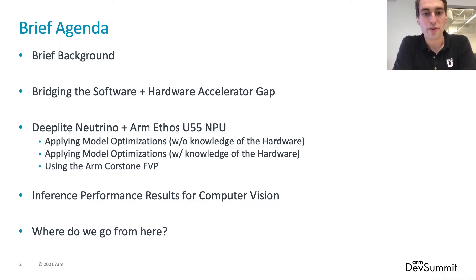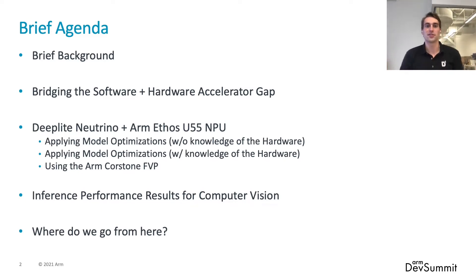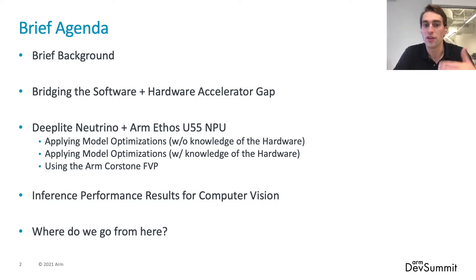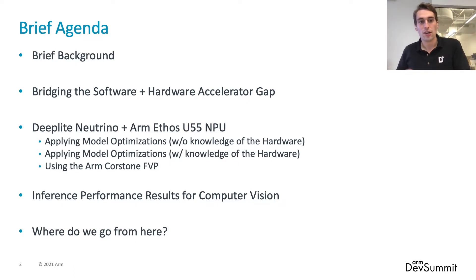To set the scene, a brief background on where we're coming from at DeepLight as a software company, and of course the specialized hardware being introduced from Arm. We're going to talk about the gaps that exist here. We have more possibilities and options than ever for tools and solutions as developers, but more complexities than ever on how to actually implement them in production. To address this gap, particularly for inferencing at the edge, we've looked at the DeepLight Neutrino software and how applicable its optimizations are to the Arm Ethos U55 and U65 NPU.